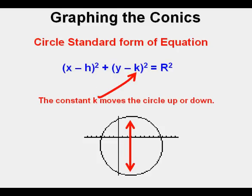The constant k is a number that moves the center of the circle up or down from y equals 0 on a coordinate plane. Also counterintuitively, if k is a positive number so that it's y minus a positive number, it moves the center of the circle upward, while a negative k resulting in y plus a number moves the center of the circle downward.